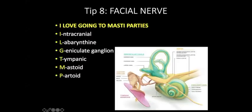Coming to the facial nerve — the facial nerve is the most important structure in the middle ear and mastoid. If there were no facial nerve, the specialty of otology as such wouldn't have existed — it would have been taken over by general surgeons or neurosurgeons.